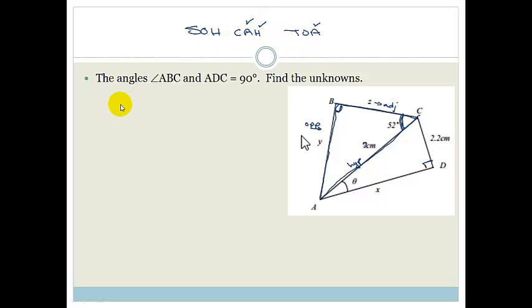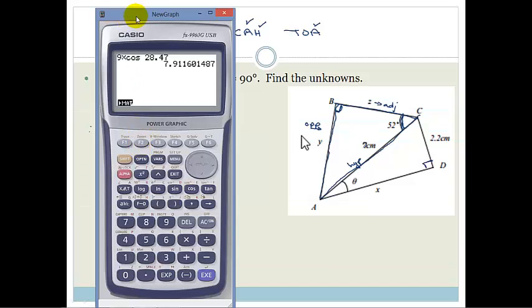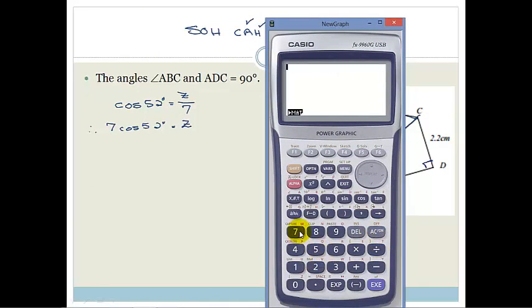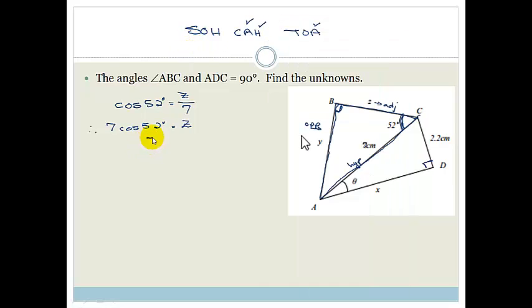So we've got cos of 52 degrees is equal to the adjacent side, which is Z, over the 7, 7 cm. So therefore, we can say that 7 cos of 52 degrees is equal to Z. So now we get out our calculator, and we basically pop it into our calculator. We go clear, and we go 7 times cos of 52 degrees, and we see we get 4.31. Therefore, Z is equal to 4.31 cm. So that side there is 4.31 cm.